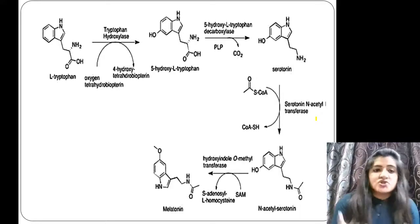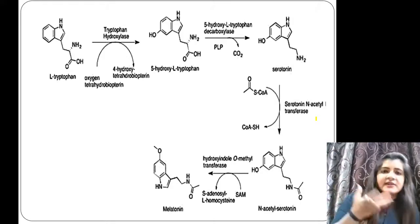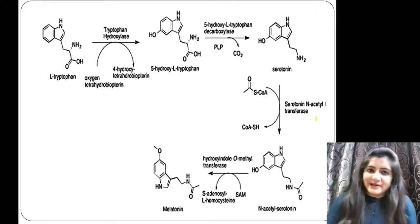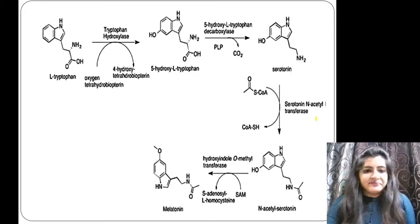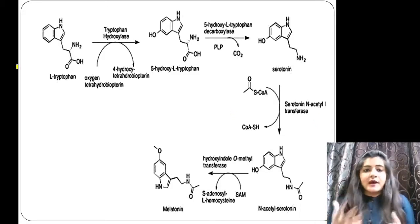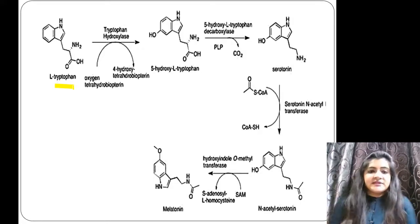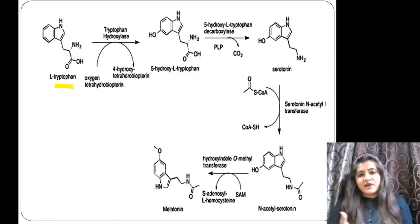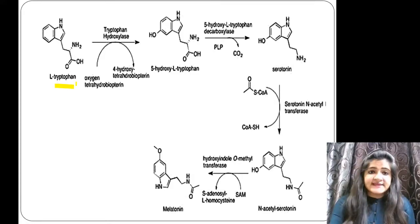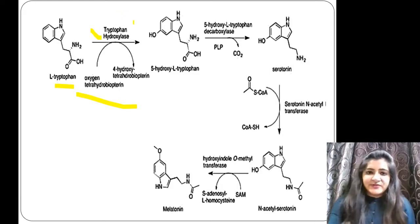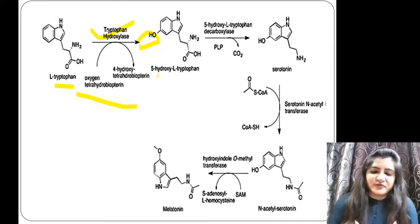Now we will see the synthesis of serotonin and melatonin. Serotonin acts as a precursor in the synthesis of melatonin. Starting from L-tryptophan, with the help of the enzyme tryptophan hydroxylase — with oxygen and tetrahydrobiopterin converted to 5-hydroxy-tetrahydrobiopterin as coenzyme — a hydroxyl group is added to form 5-hydroxy-L-tryptophan.